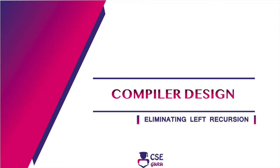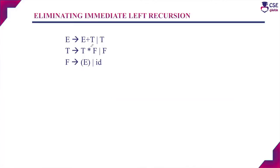Welcome to CSE Guru. In this session we will discuss the topic of eliminating left recursion with an example. The given grammar is: E derives E plus T or T, T derives T star F or F, and F derives E or id.